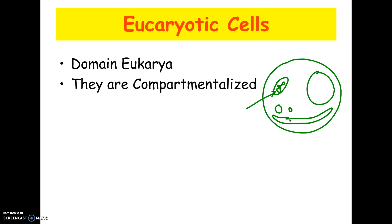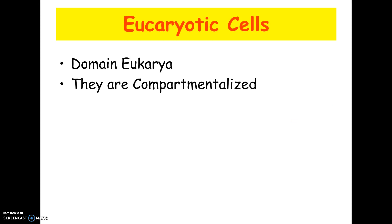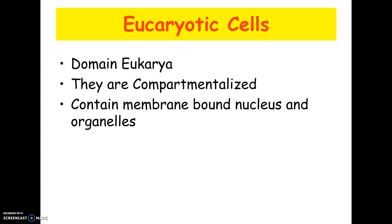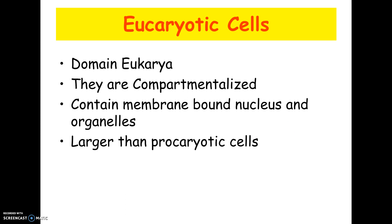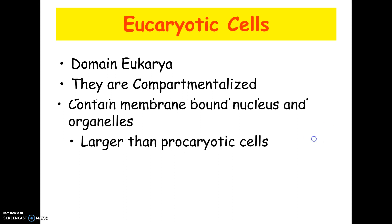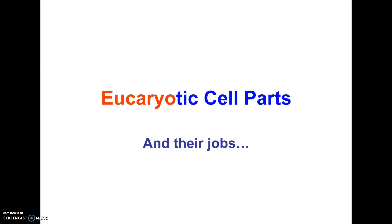A nice analogy is your kitchen. Your kitchen is compartmentalized — you have a refrigerator that's colder than the rest without you freezing, a freezer that's even colder, an oven where you cook things without cooking yourself, and a sink that captures water without it spilling everywhere. Each area does a job independently without affecting other areas, and a eukaryotic cell can do the same. Eukaryotic cells have a membrane-bound nucleus, organelles, and are larger than prokaryotic cells — all because of compartmentalization. Next we'll talk about the actual cell parts and what they do.